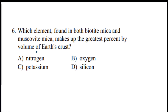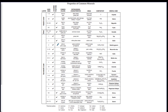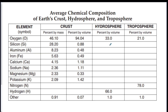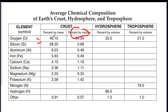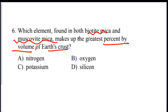Number six: which element found in both biotite mica and muscovite mica makes up the greatest percentage by volume of Earth's crust? First, check the elements in biotite mica and muscovite mica on page 16. Then go to the chart on page 1 — percentage by volume in the crust. Out of the elements shared by both minerals, silicon and oxygen are both present, but oxygen has the highest percentage at 94% by volume, while silicon is only 0.88%. So the answer is B — oxygen.